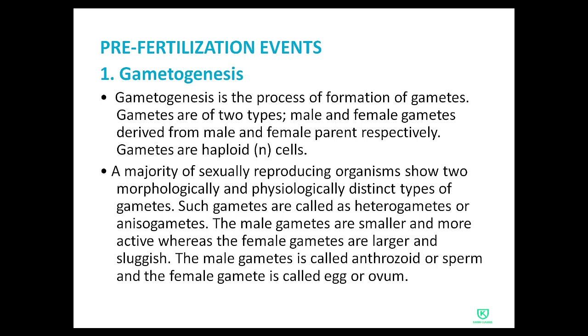The majority of sexually reproducing organisms show two morphologically and physiologically distinct types of gametes. Such gametes are called heterogametes or anisogametes.